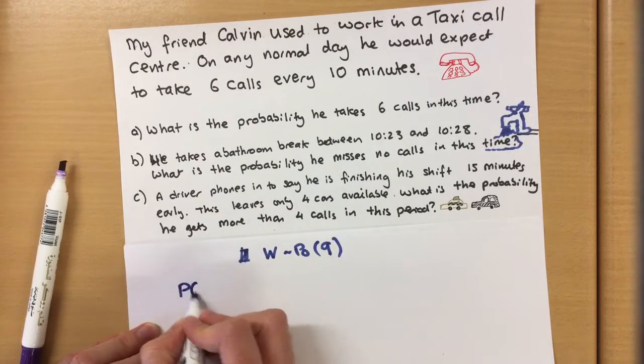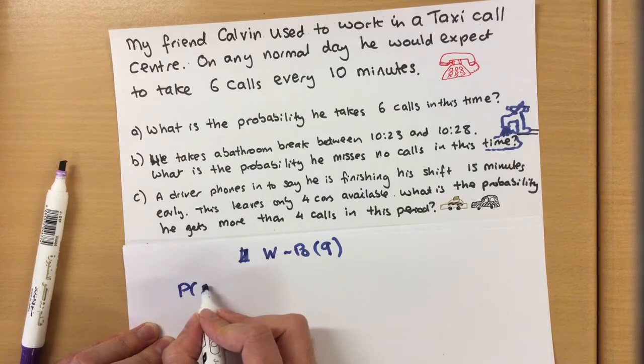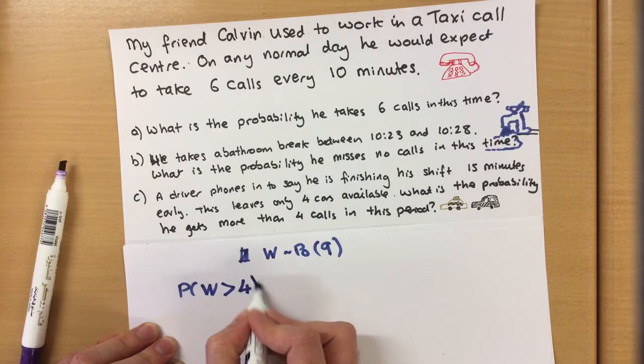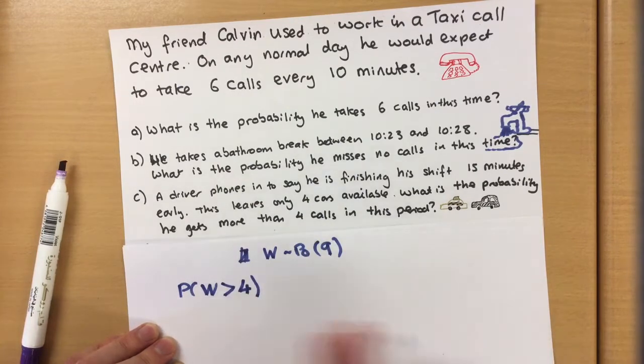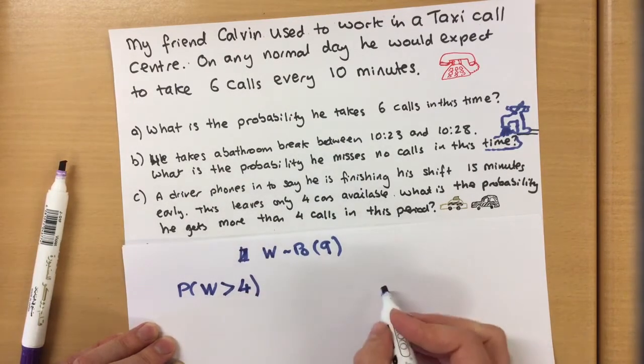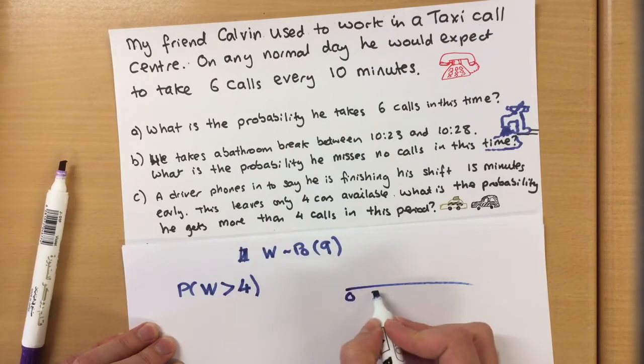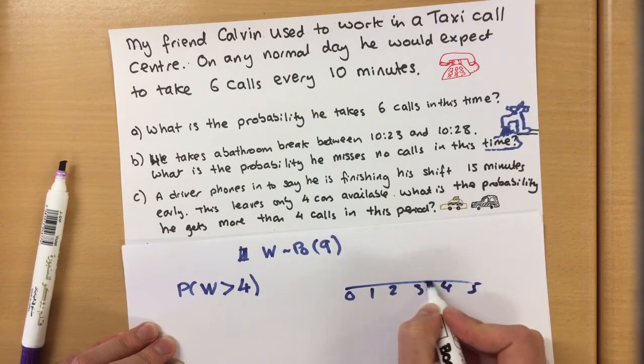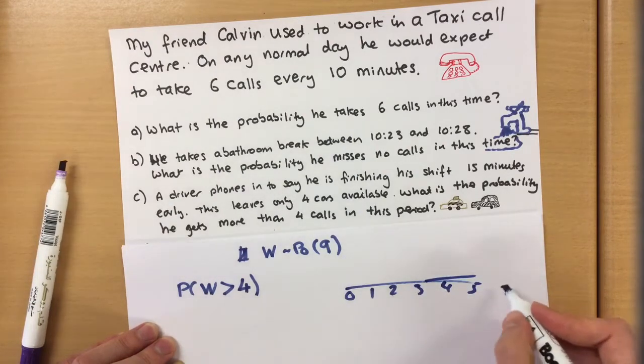So you find what's the probability in this time he gets more than four calls? So obviously four is okay, four cars, and more than four is an issue. Now remember you're never too far away from number lines, that's so so useful.